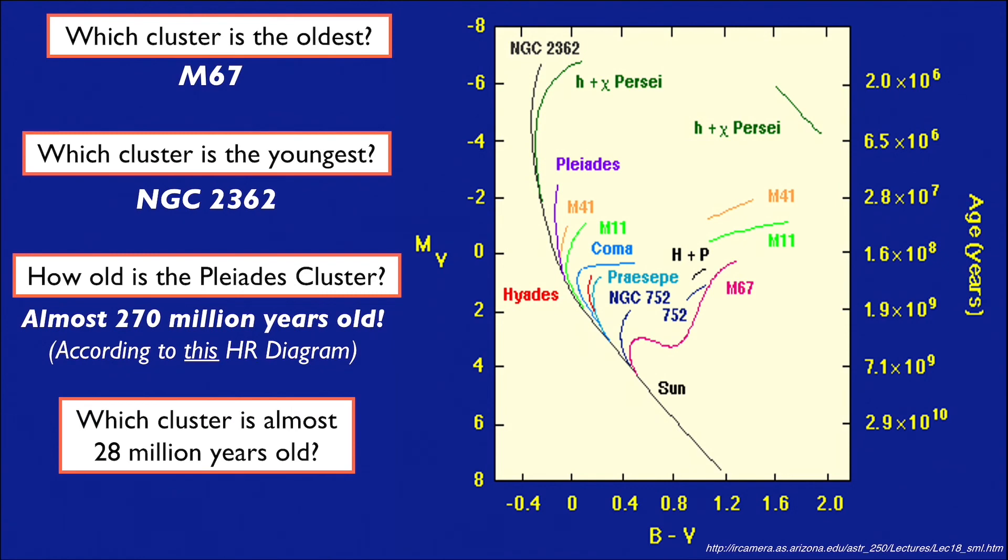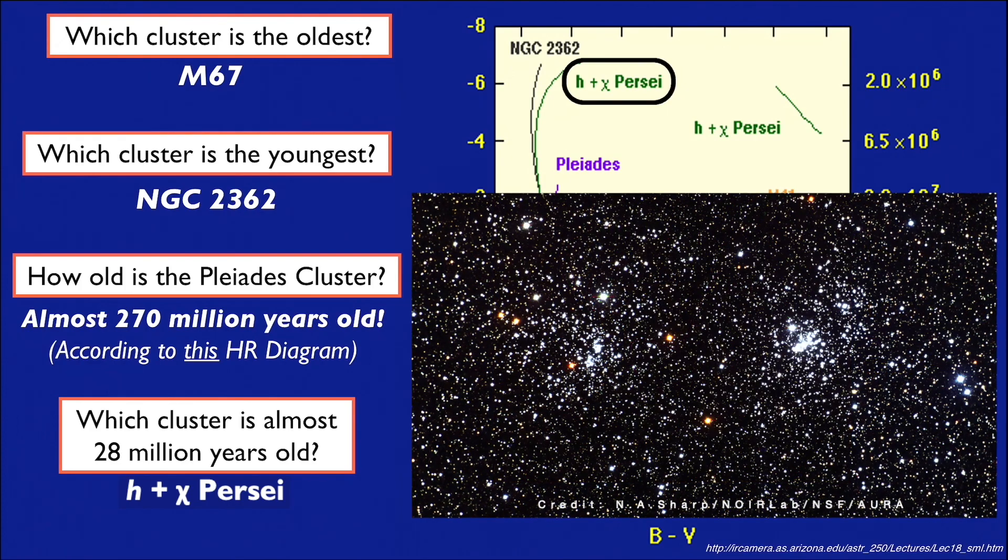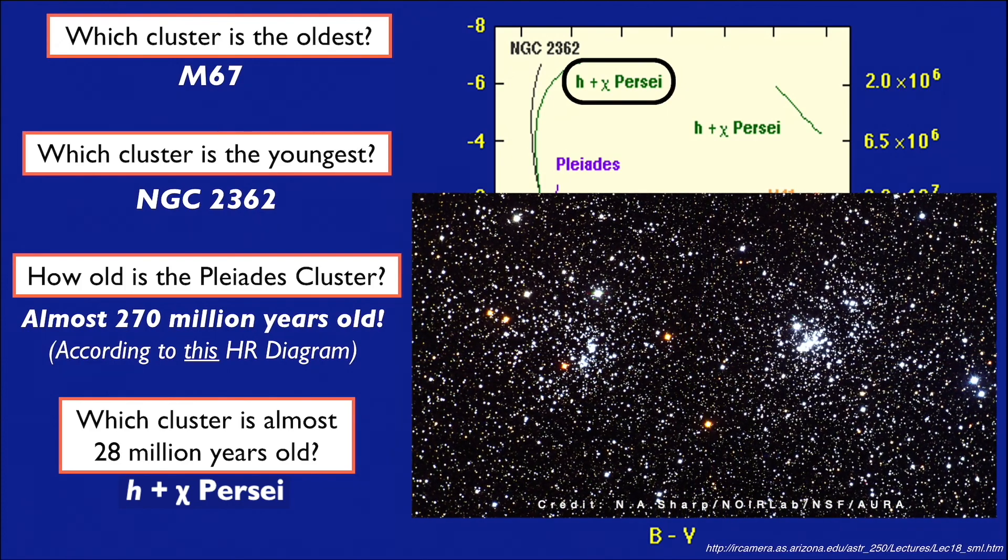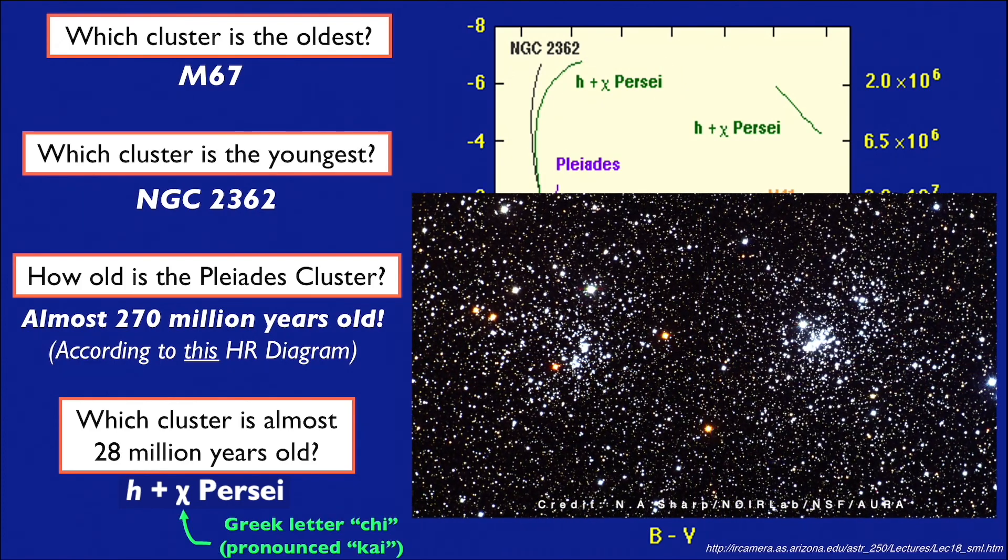Now we're looking for a cluster whose main sequence turnoff point lines up with an age of 28 million years, written here as 2.8 times 10 to the power of 7 in proper scientific notation. That cluster happens to be H plus Chi Persei, where the letter that looks like a Latin X is actually the Greek letter Chi.